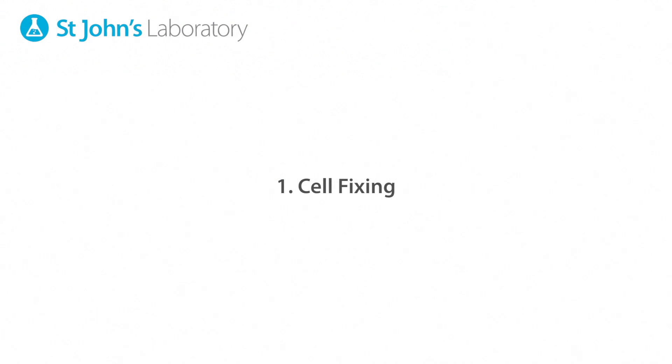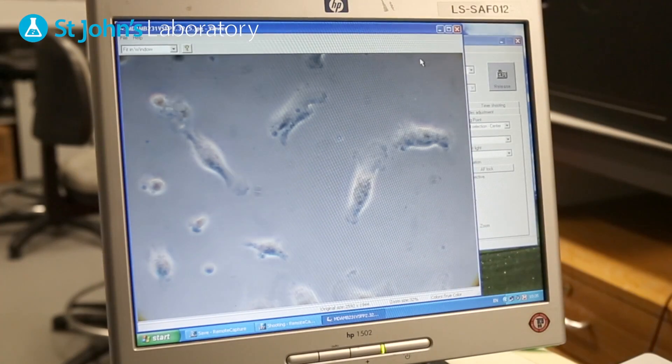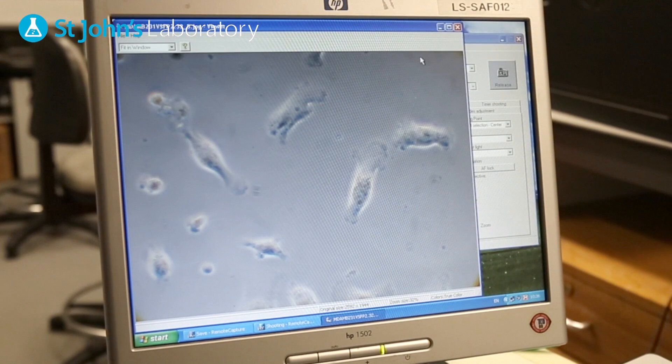After growing your cells in the laboratory you will need to fix them prior to any antibody application. It is important to be aware of the monolayer structure both before and after this process is carried out.